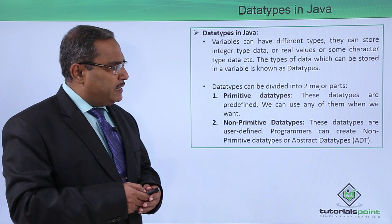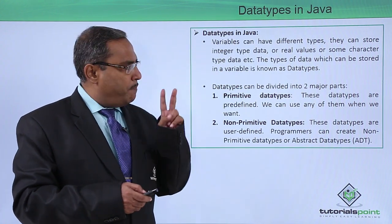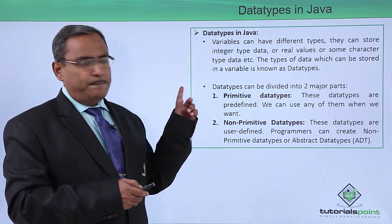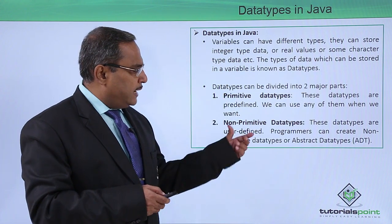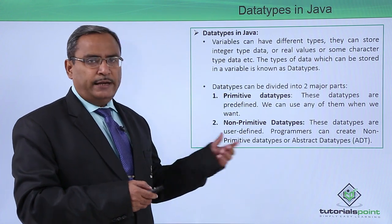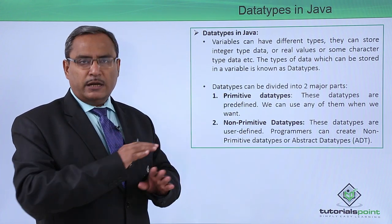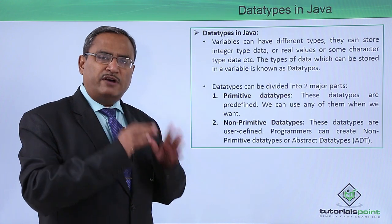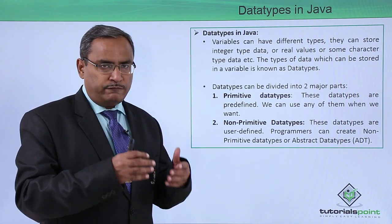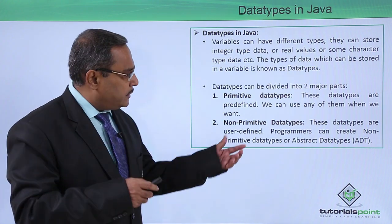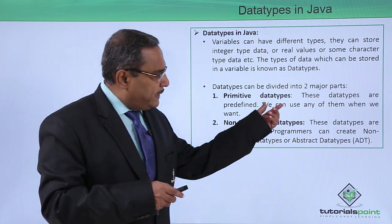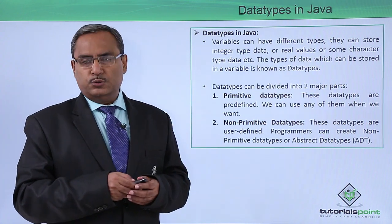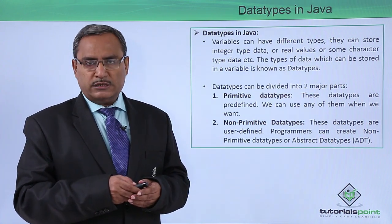Data types can be divided into two major parts. One is the primitive data types. These data types are predefined — the Java compiler knows them. So it is a primitive data type because Java already knows these kinds of data types, and we can use any of them when we want to use them in our Java code.